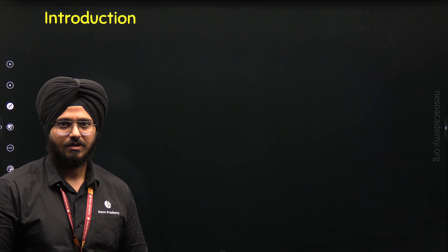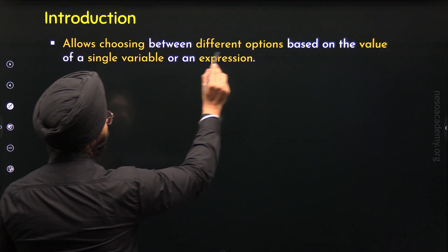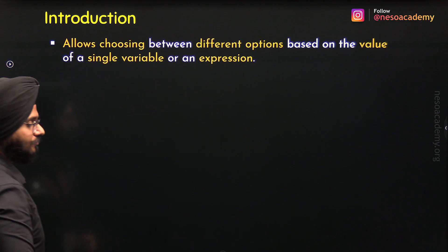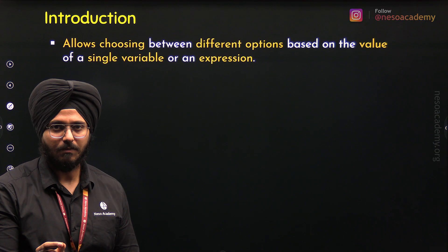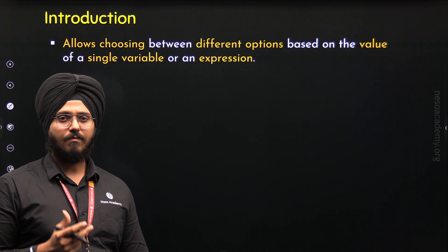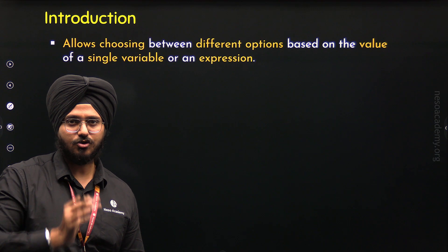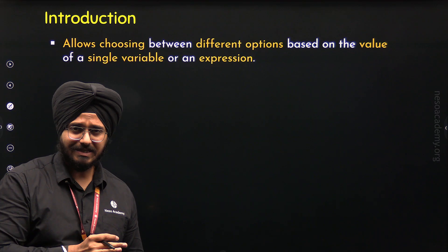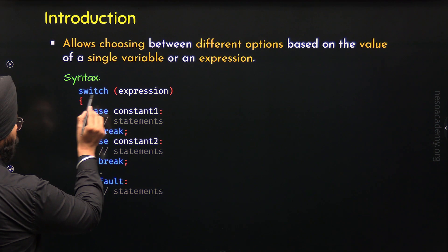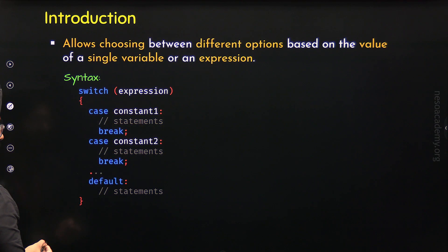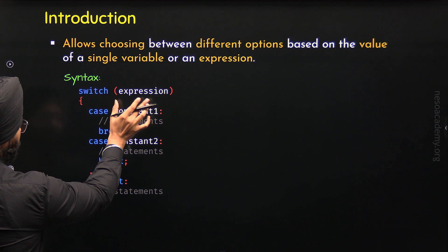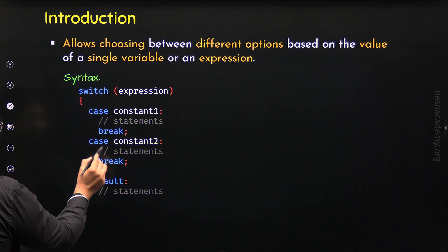What is the switch statement? The switch statement allows us to choose between different options based on the value of a single variable or an expression. To the switch, we can pass a single variable or an expression. Based on its value, we would be able to evaluate a specific option of the switch. This can be better understood with the syntax. We first need to specify the keyword switch, and within parentheses, provide a single variable or an expression. Based on that value, a specific case will be evaluated.